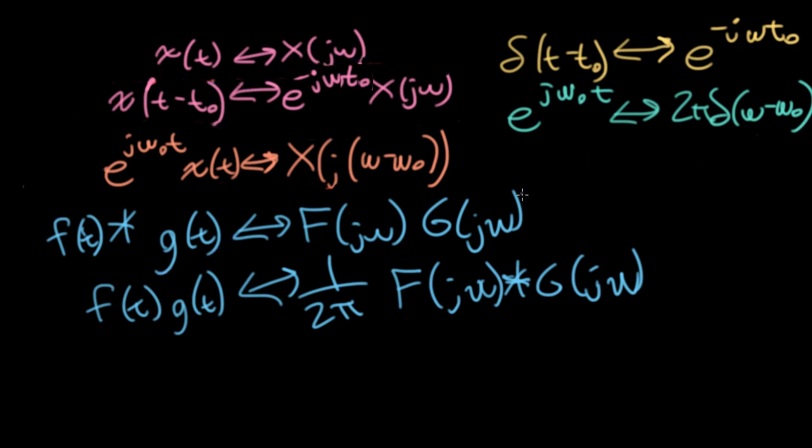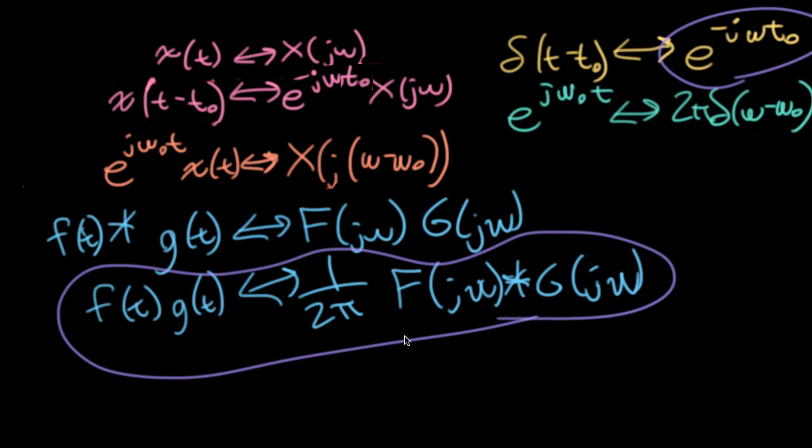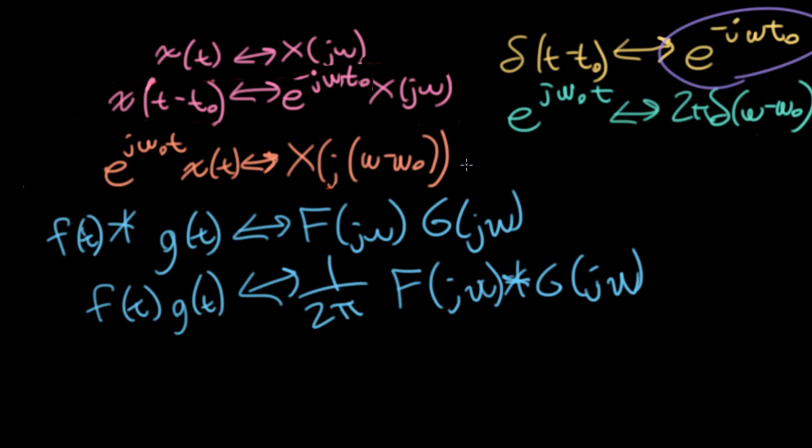So back in Lecture 18, we showed how we could prove this time shift function by using this convolution in time property combined with the knowledge of the Fourier transform of our delta function, because convolving a function with delta(t minus t0) corresponds to a shift of t0. And convolving our knowledge of that transform pair with the fact that convolution time equals multiplication frequency gives us our Fourier transform property.